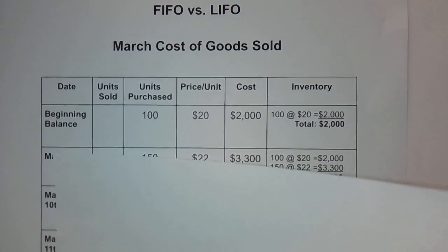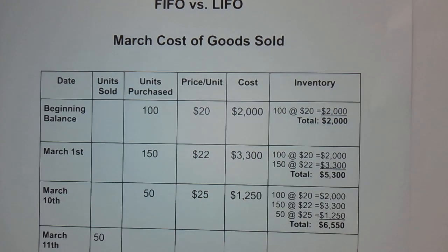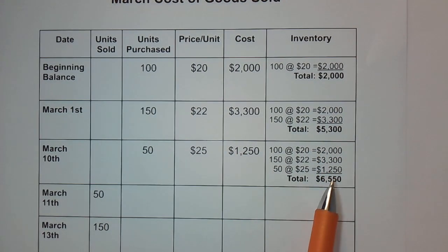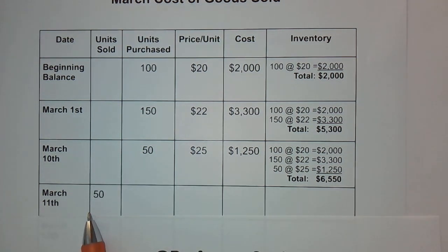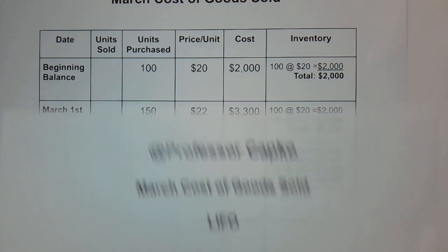Now let's switch to LIFO — last in, first out — which is the reverse of FIFO. The beginning inventory purchases are exactly the same. We're still selling 50 units on March 11th, and we're not worrying about the sales price; we're just focusing on cost.